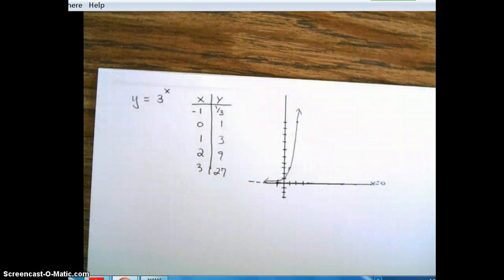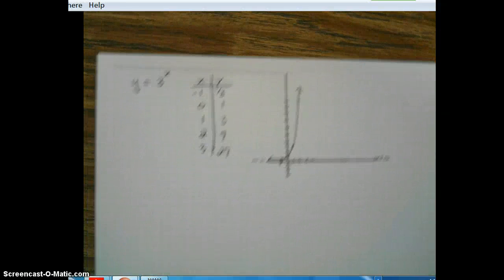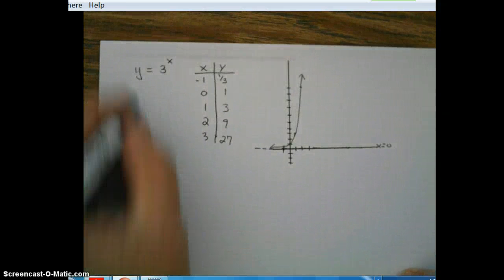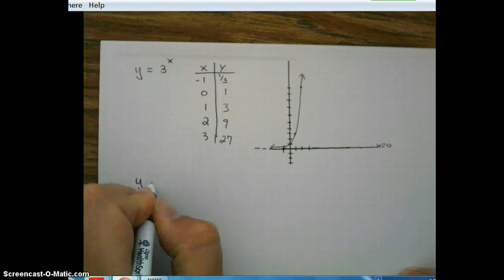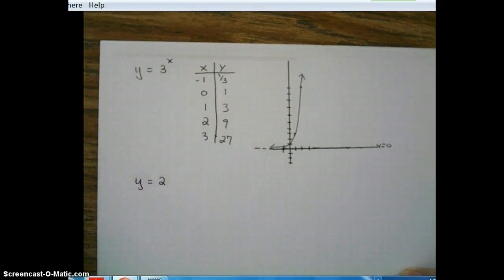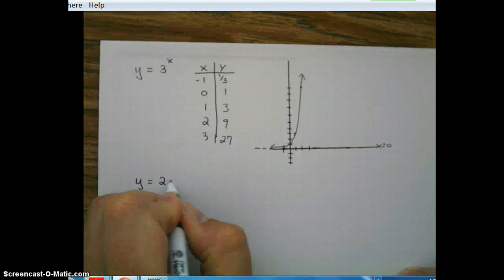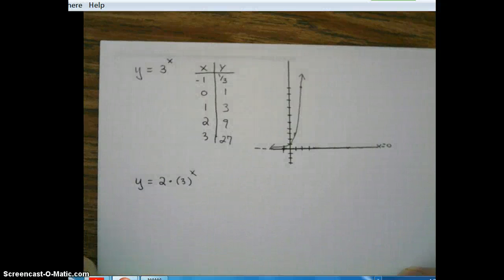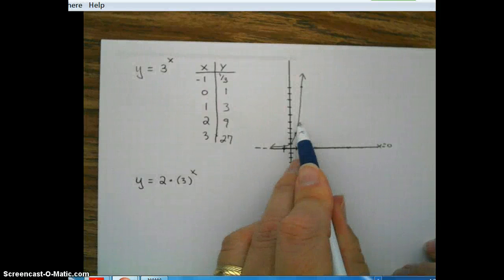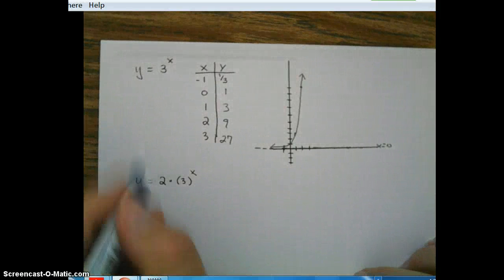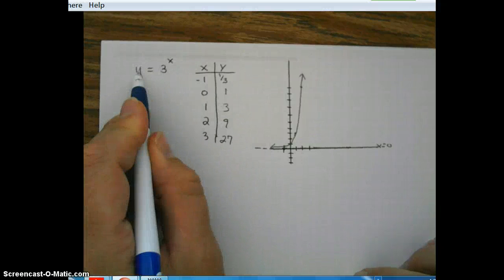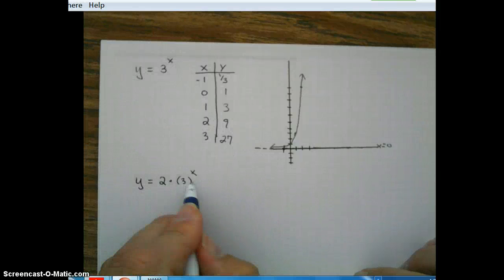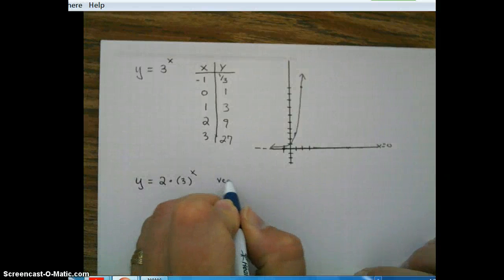Okay, let's take a look at our parameter changes now. So parameter changes, using this as our parent, first thing we're going to do is look at an a value. So let's take a look at an a value of 2. So 2 times 3 to the x. How does that affect our graph? Well, first of all, 3 to the x, remember, represents y. So basically what we're doing is we're multiplying all the y-coordinates by 2. Remember this is a vertical stretch.